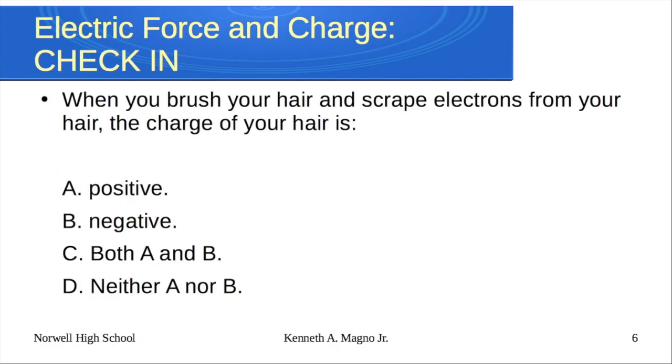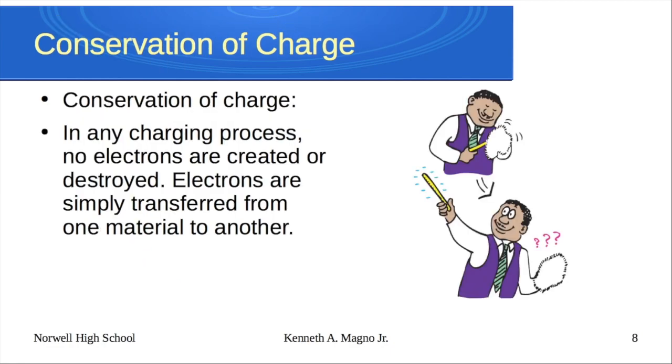Just a little quick example here. Check in. When you brush your hair and scrape electrons from your hair, what happens to the charge of your hair? I'm taking electrons off of my hair and they end up in my comb. Does it become A positive, B negative, C both A and B, or D neither? The answer is positive because I took those electrons from one place, which means I've now made my hair into like a positive ion and I've made the comb into like a negative ion.